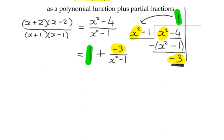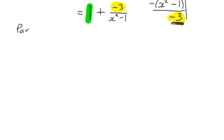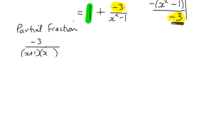We now work out the partial fractions of -3/(x² - 1). We refactorize the denominator, which gives (x+1)(x-1) — those are distinct linear factors, not repeated. So we set up the template: -3/((x+1)(x-1)) = A/(x+1) + B/(x-1).